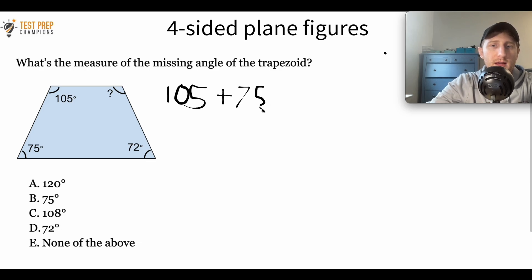So from that fact, we can write the following equation. We can say that 105 plus 75 plus 72 plus X equals 180.